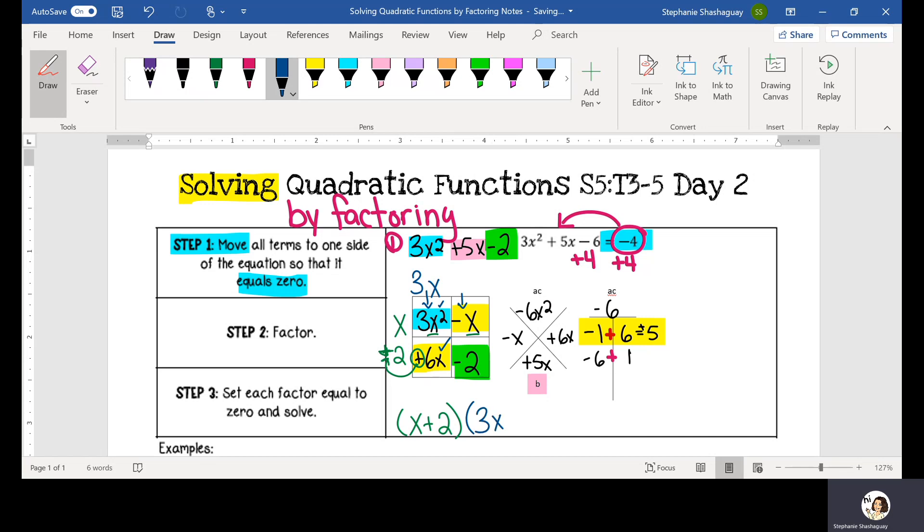Now I have negative x and negative two. Because this is negative, I'm going to pull out a negative sign. And the only thing that negative x and negative two have in common is a one. So my second factor is three x minus one.